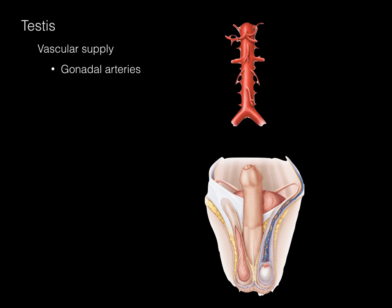The testes have the following vascular supply. The gonadal arteries arise from the abdominal aorta. The right gonadal artery courses down and goes through the deep inguinal ring, through the inguinal canal, and into the spermatic cord. The left gonadal artery similarly hits the deep inguinal ring, courses through the inguinal canal, and down in the spermatic cord, providing arterial supply to the testes.